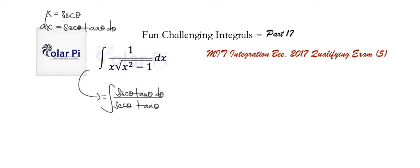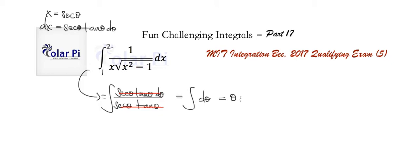So then the integral reduces to just the integral of d theta. And we know that this is equal to theta. The MIT Integration B qualifying exam had us go from 1 to 2, so let's see what we'd have to do as a definite integral. We're not done here anyway — we've got to go back to x, because that's how we started.